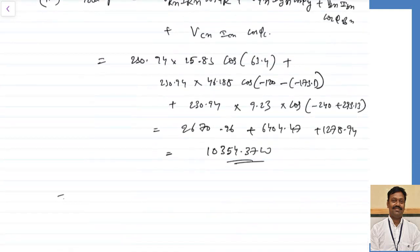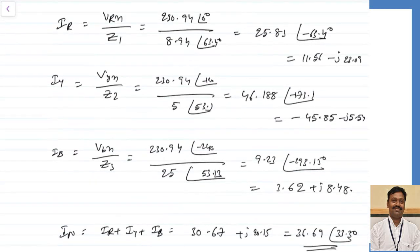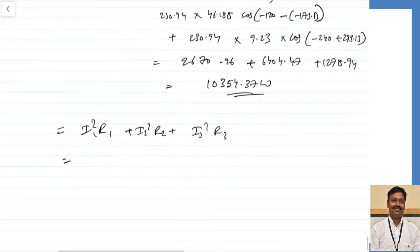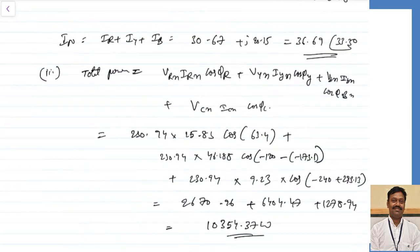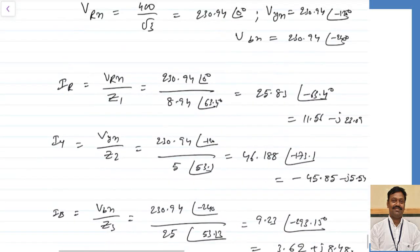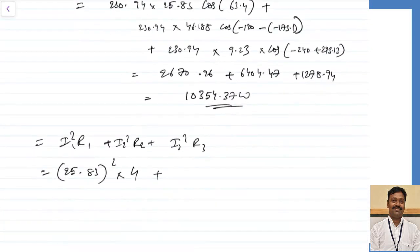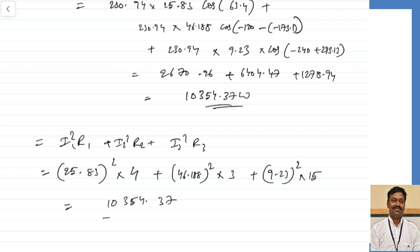The second technique for power uses P = I²R for each phase: IR²×R1 + IY²×R2 + IB²×R3 = (25.83)²×4 + (46.188)²×3 + (9.23)²×15 = 10354.37 W. This confirms the same result. Whichever technique is comfortable, you can follow either one. Now let us take another example to clarify the first and second techniques — the VON method and star-to-delta conversion.